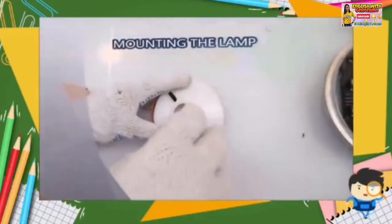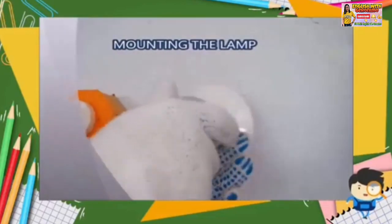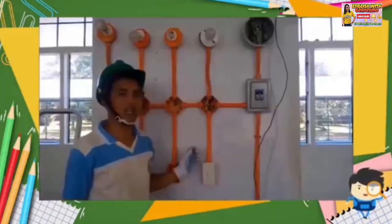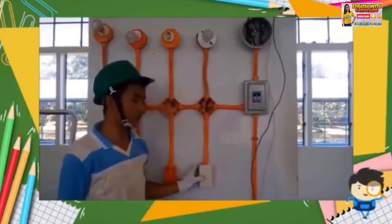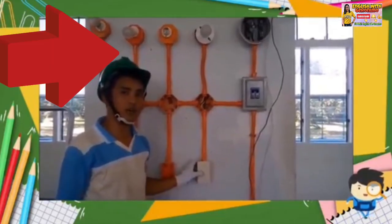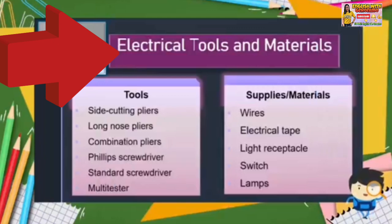Connect the lamp to the lamp receptacle. Check the lighting fixture — verify its function by turning on the switch. These are the electrical tools and materials present in the video. What are the tools and materials that you got right?